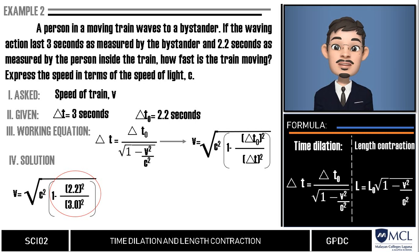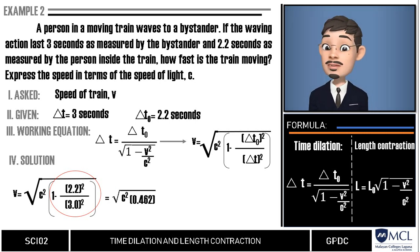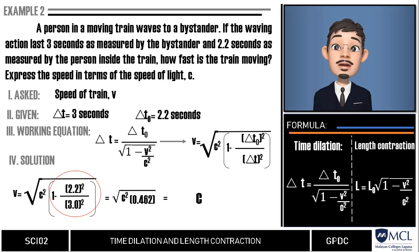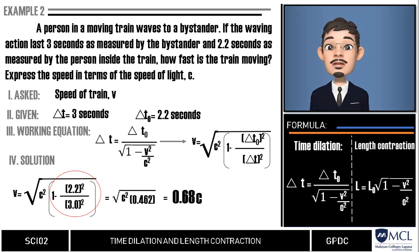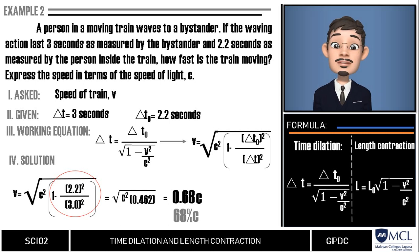We have together square roots. So, the square root of c squared is c and the square root of 0.462 is 0.68. Then, the velocity of the train is 0.68c or 68% of the speed of light.